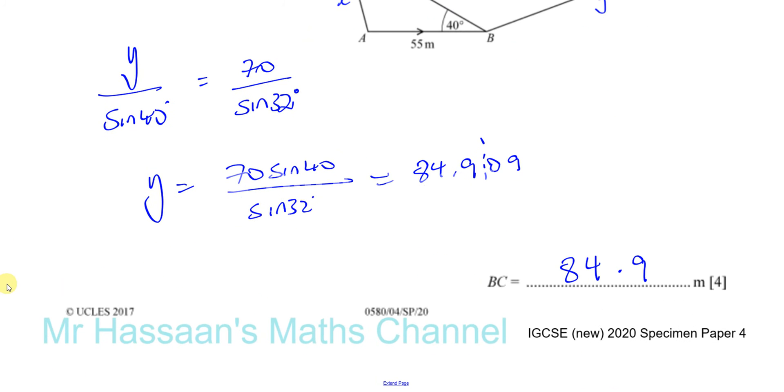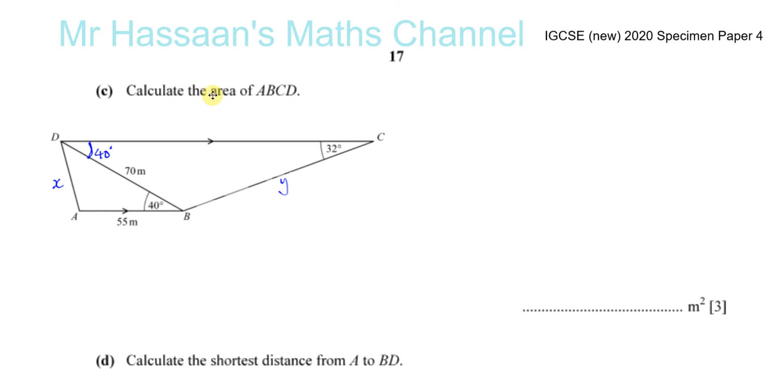So if you round this to 3SF, which you're supposed to if there's no instructions, it's not exact, you get 84.9 meters. And that's the answer to part B. And now we're going to go on to part C.